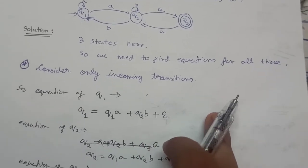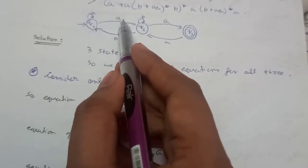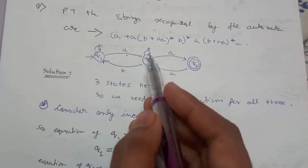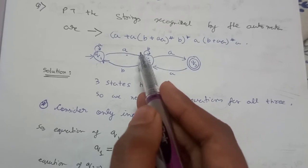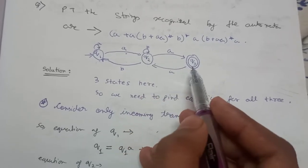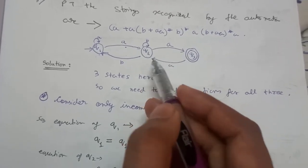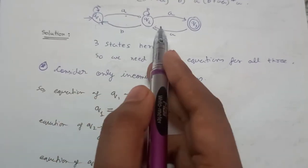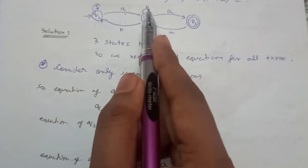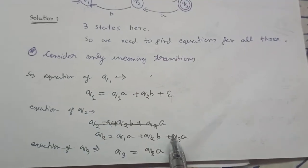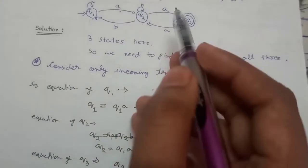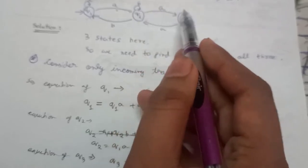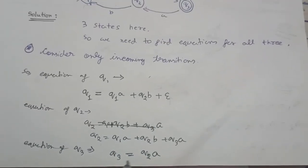For Q2: Q1 takes input A to reach Q2, Q2 takes input B to reach Q2, and Q3 takes input A to reach Q2. So Q2 = Q1A + Q2B + Q3A. For Q3, there is only one transition: Q3 = Q2A.